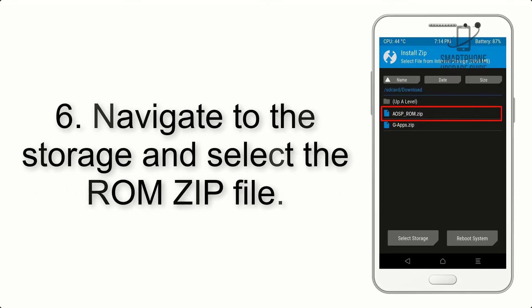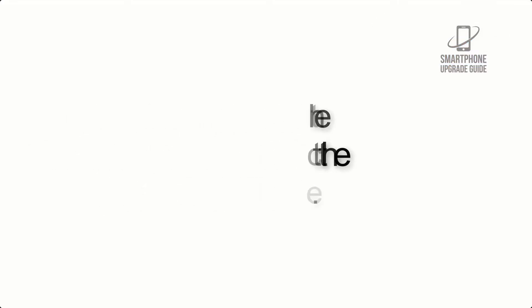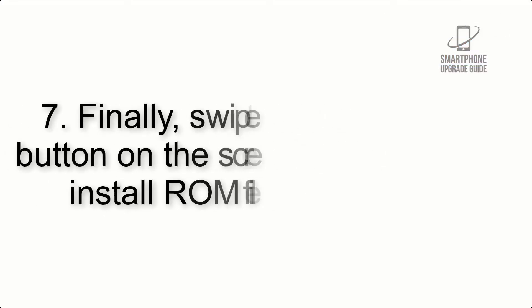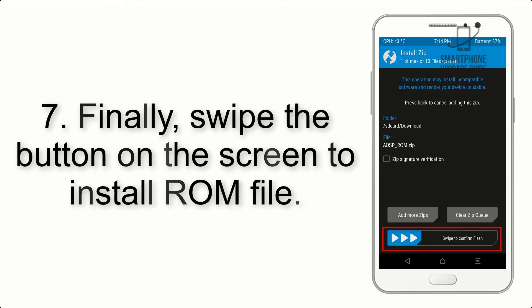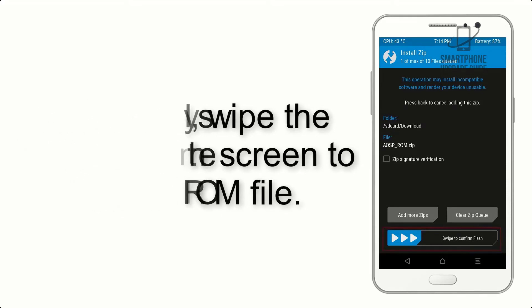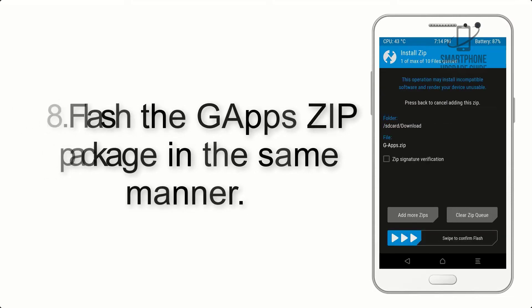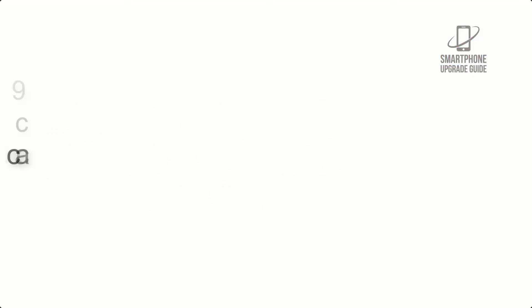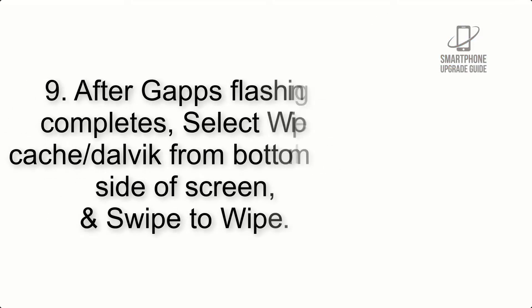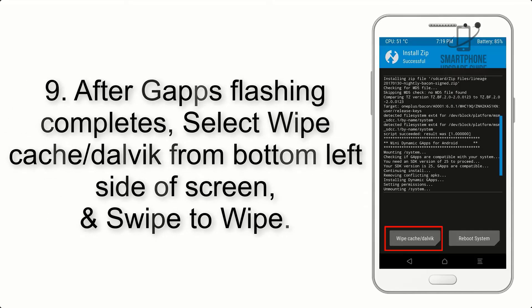Step 5: Go back to the recovery main screen and tap on the Install button. Step 6: Navigate to the storage and select the ROM zip file. Step 7: Finally, swipe the button on the screen to install the ROM file.